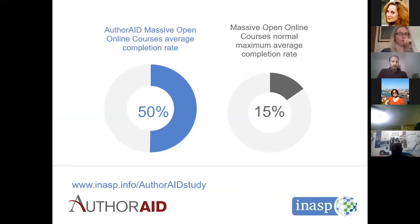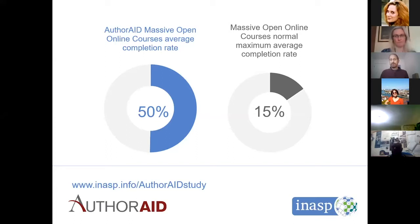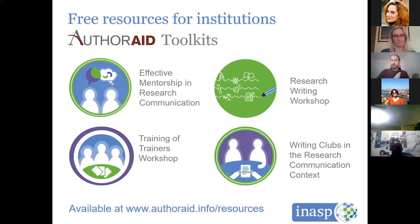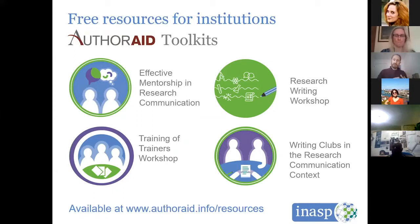We've found that there is approximately a 50% completion rate on our massive online open courses, which is really good — much higher than the average MOOC completion rate. I think this is because the courses are tailored towards researchers in Africa, Asia and Latin America. We also have a range of free resources that you can take from our AuthorAid website, use and adapt to your own circumstances — good reading material for you as a researcher, but also usable to train workshops at your university or research institution.